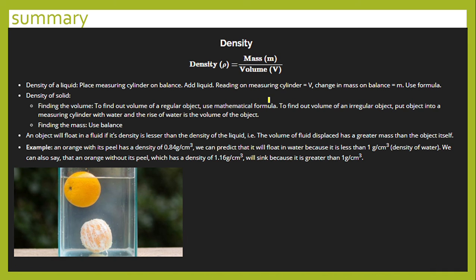Examples of floating and sinking include a needle and a cork. Another interesting example involves an orange: a peeled orange and an unpeeled orange behave differently in water due to different densities. Similarly, a raw egg sinks to the bottom of a pan of water, but once boiled it floats to the top, indicating its density has decreased after boiling.